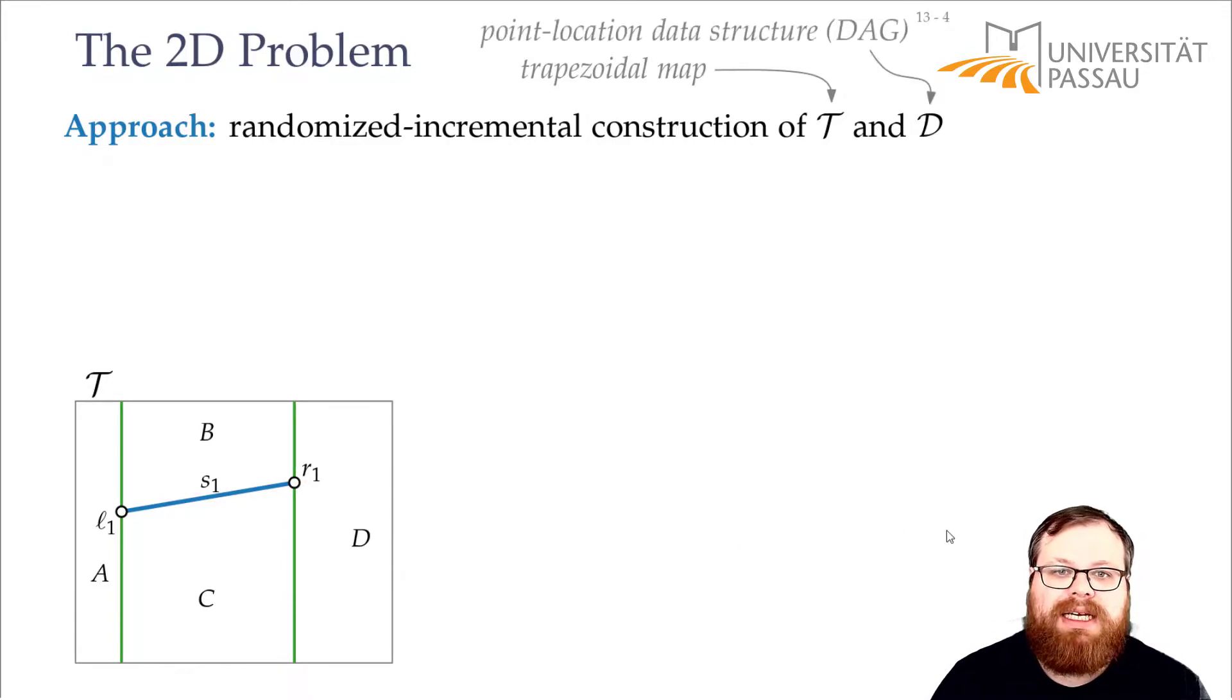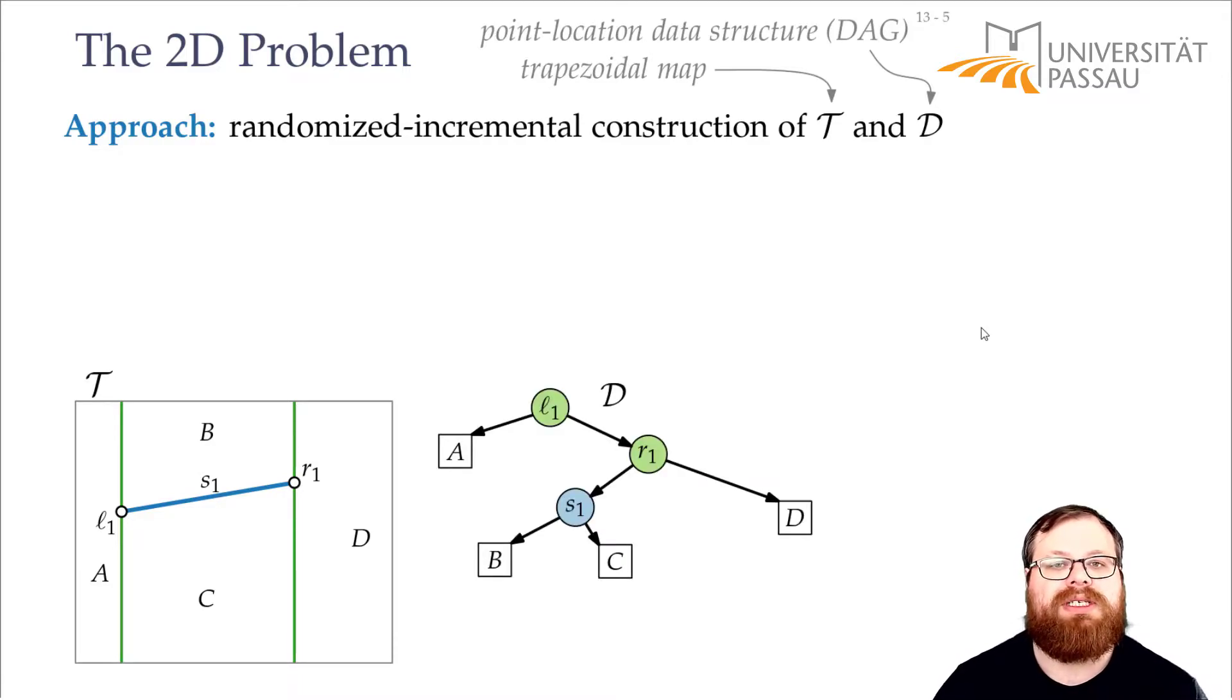And additionally, we need some data structure, and the point location data structure we want to use is something very similar to a binary search tree, but it's not exactly a tree, and you will see that in one step later. So this is just a directed acyclic graph or a DAG. In this case, in the very beginning, it's still a tree.